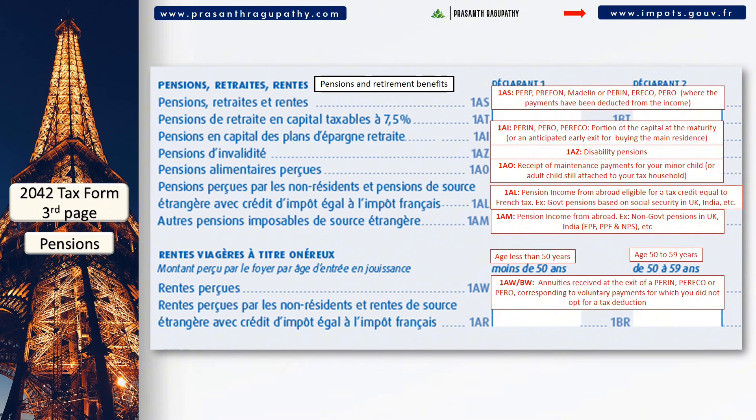Then you can move on to section 2 about income from your movable assets such as assurance-vie, interest, dividends, capital gains, etc. You can follow the explanations as shown on the screen. Do not forget to check the box 2OP if you want your income from movable and immovable assets taxed according to your tax bracket instead of the 30% flat tax.